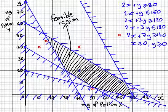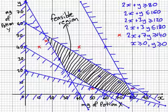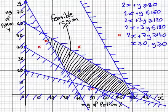Our final consideration is which is the best combination to use. From the pharmacist's point of view that will largely depend on cost. For example, 40ml of potion X and 20ml of potion Y is feasible, but is it the cheapest option?